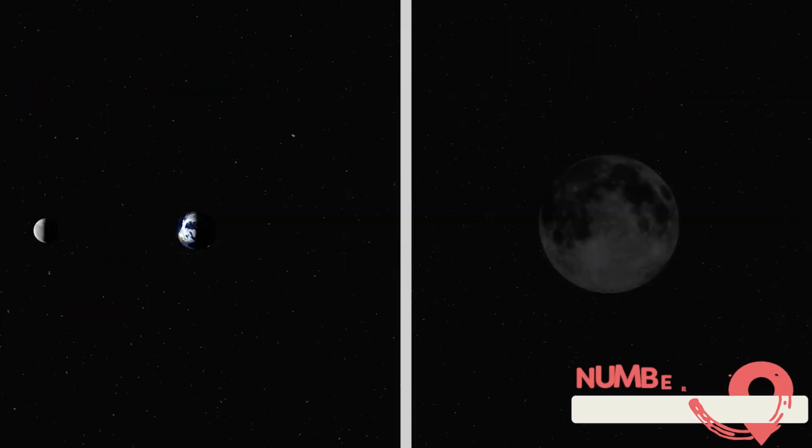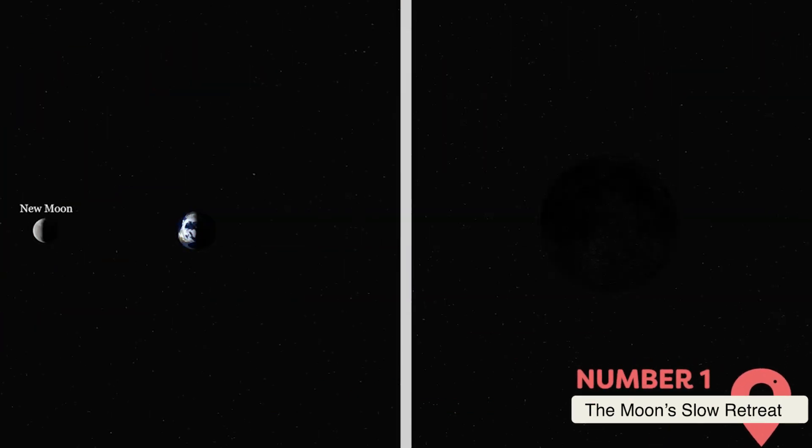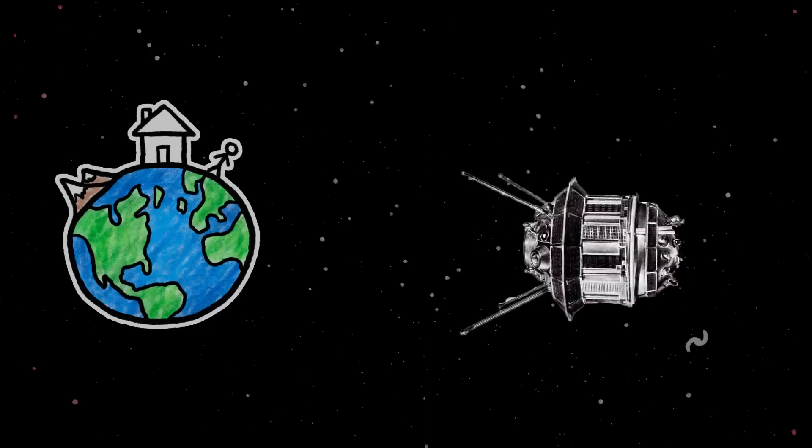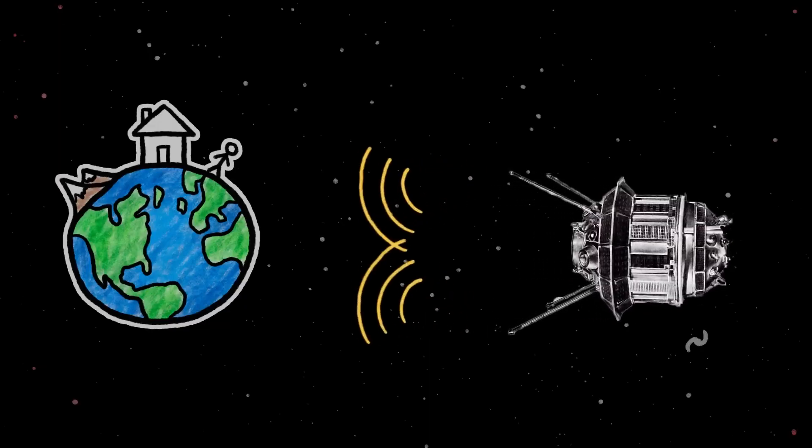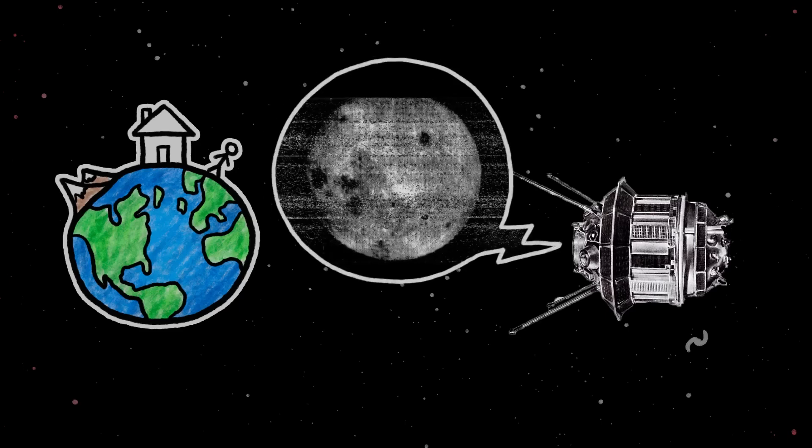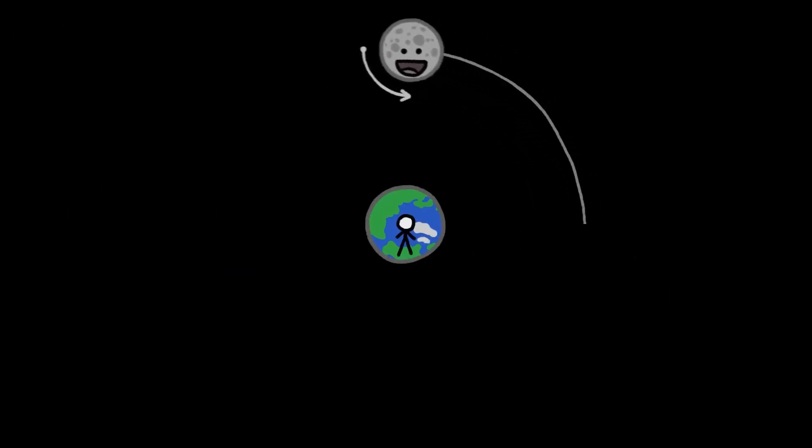The Moon's Slow Retreat. For billions of years, the Moon has been Earth's faithful companion, lighting up our nights and driving the ocean's tides. But this relationship is not as stable as it may seem. Using precise laser measurements, scientists have determined that the Moon is moving away from Earth at a rate of about 1.5 inches per year.